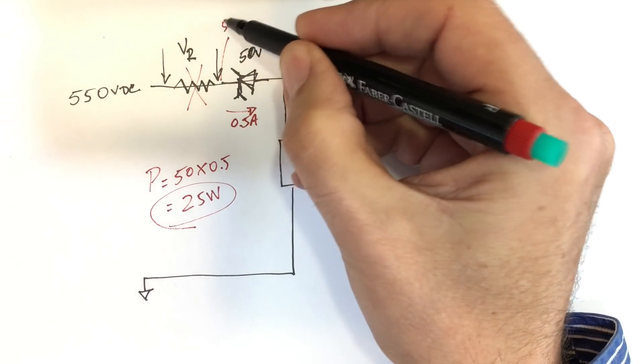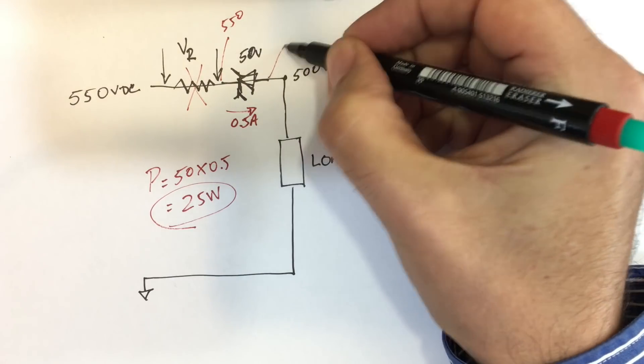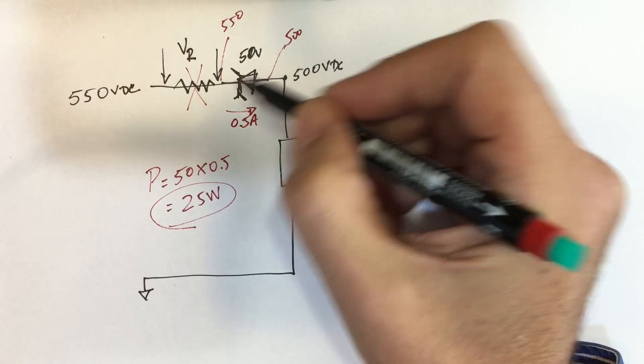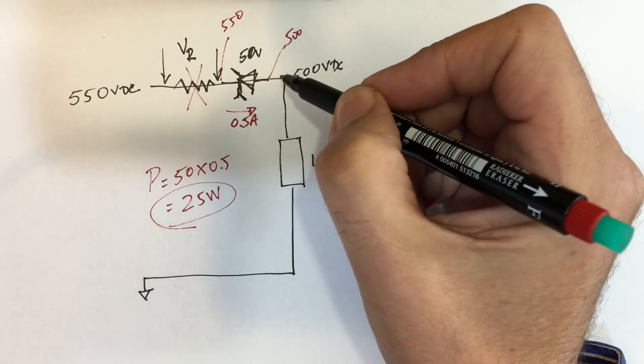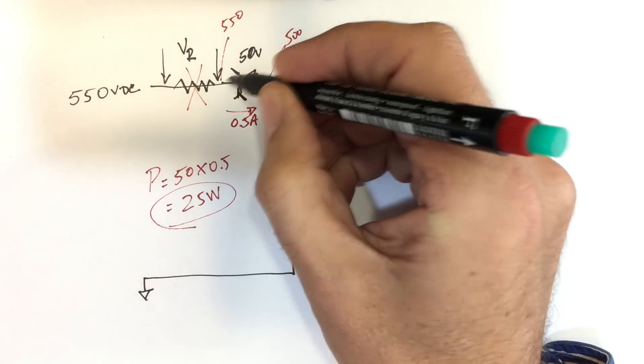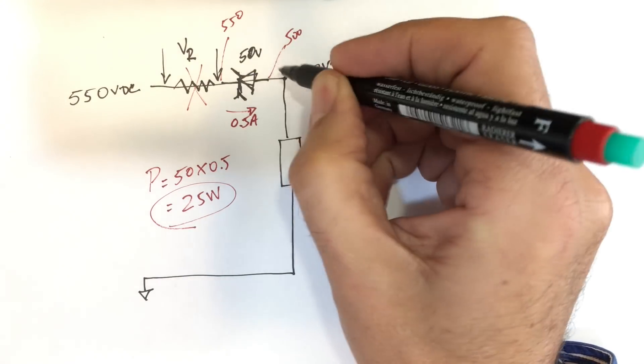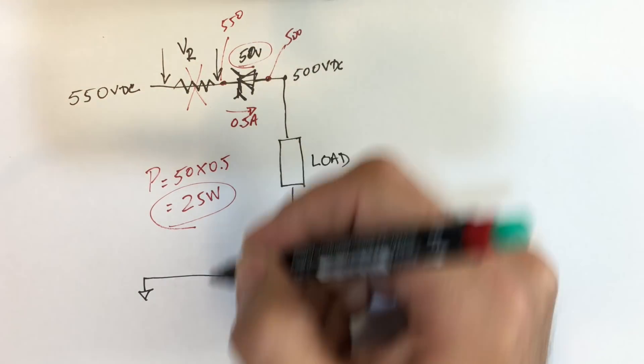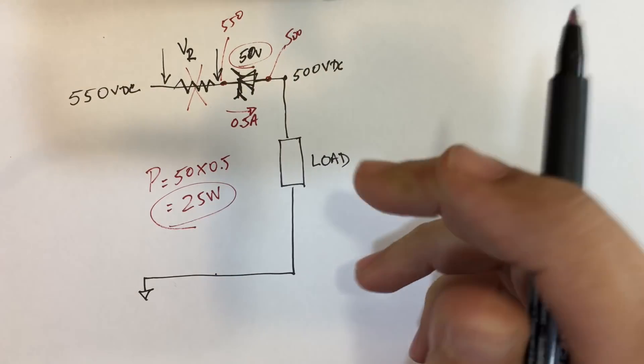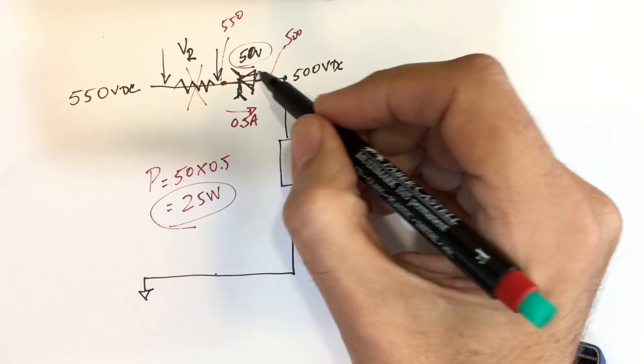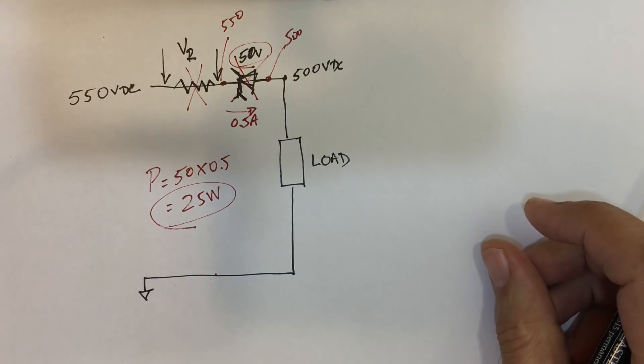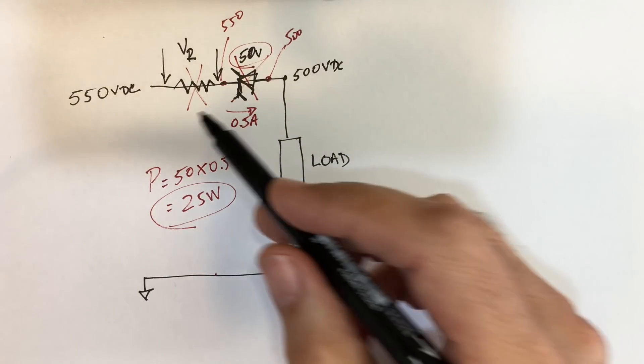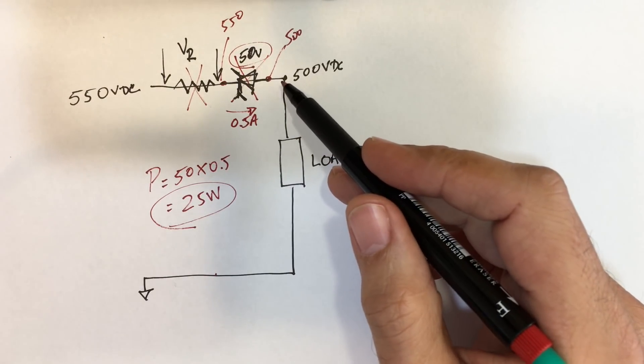And if this zener goes short, it just means your 500 volts is no longer 500 volts. It'll be 550 volts because it can go faulty with a short condition. If it goes open, then you've just flipped the switch and the power supply is no longer supplying the load. That's not too serious. But the problem mainly is that this zener, they're not that easy to come across. They're expensive because it's 25 watts.